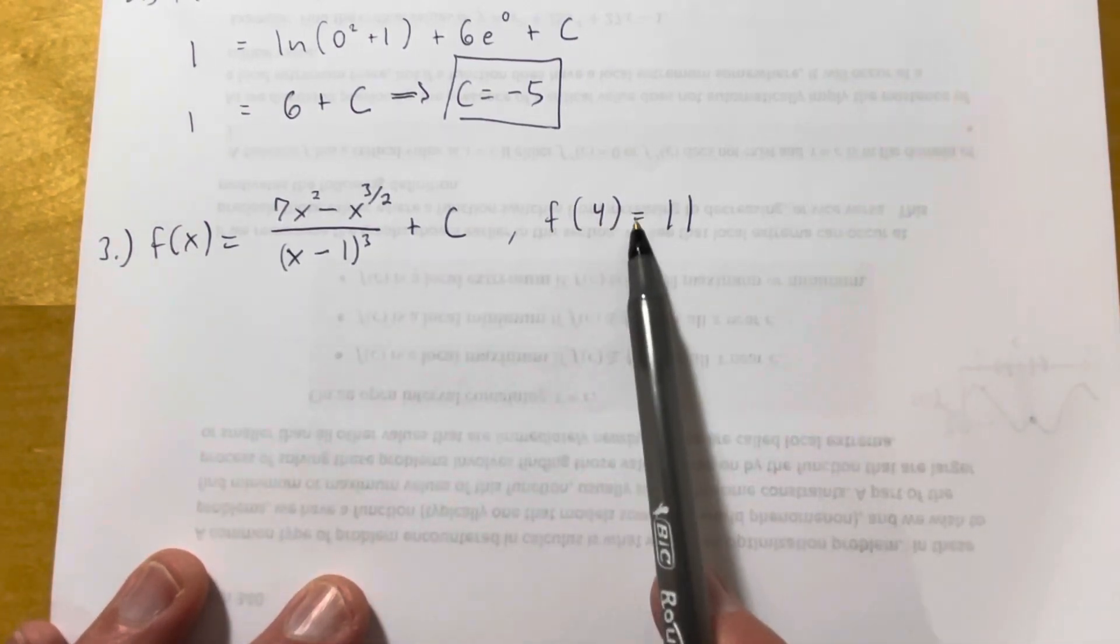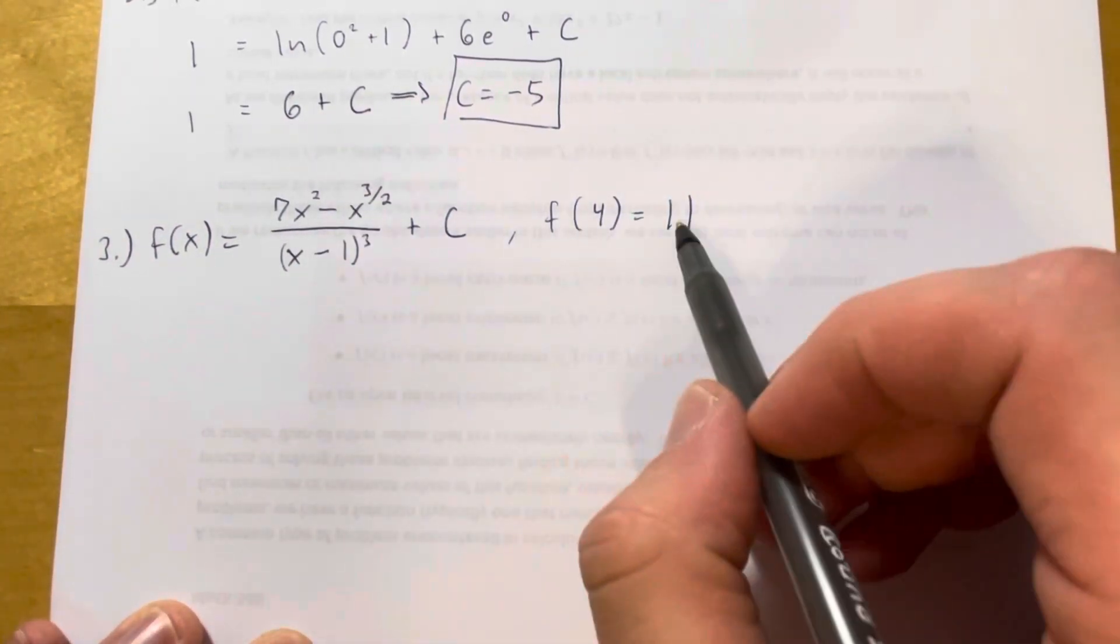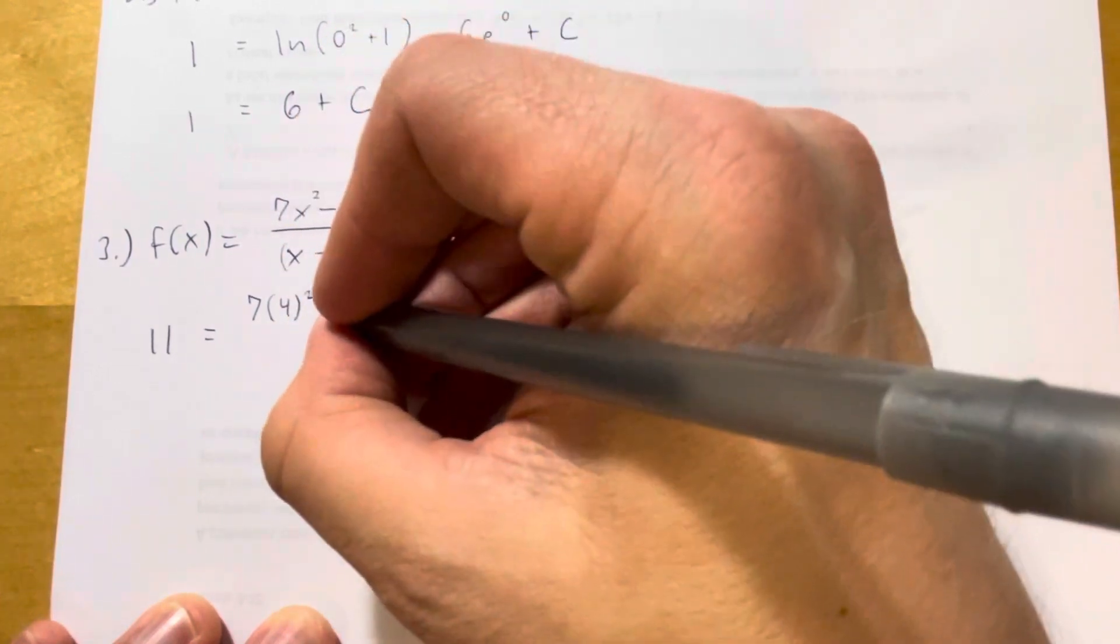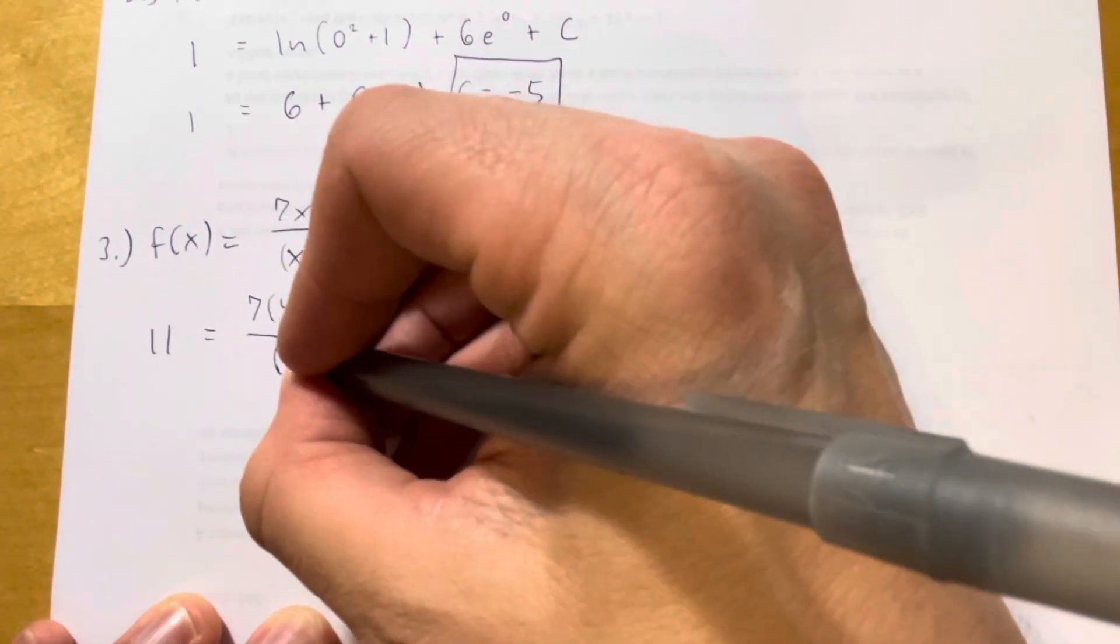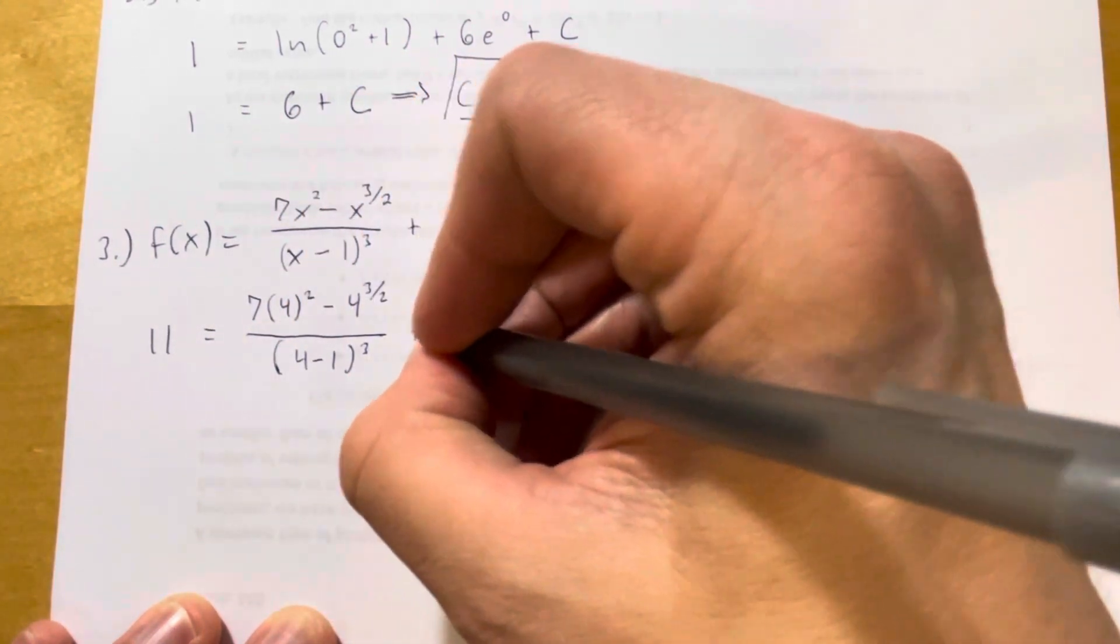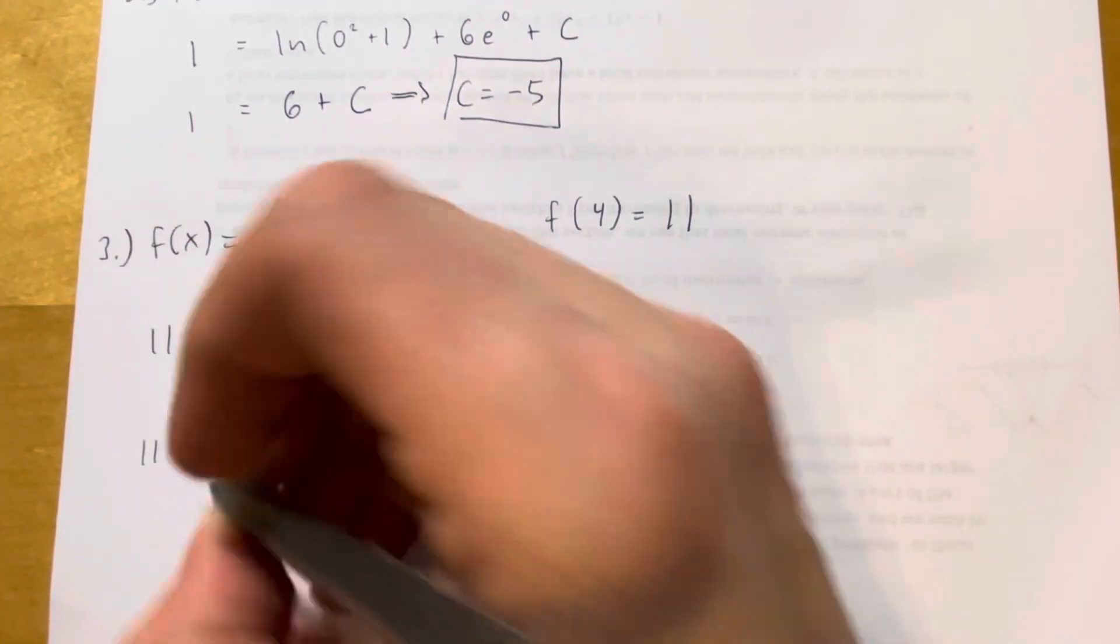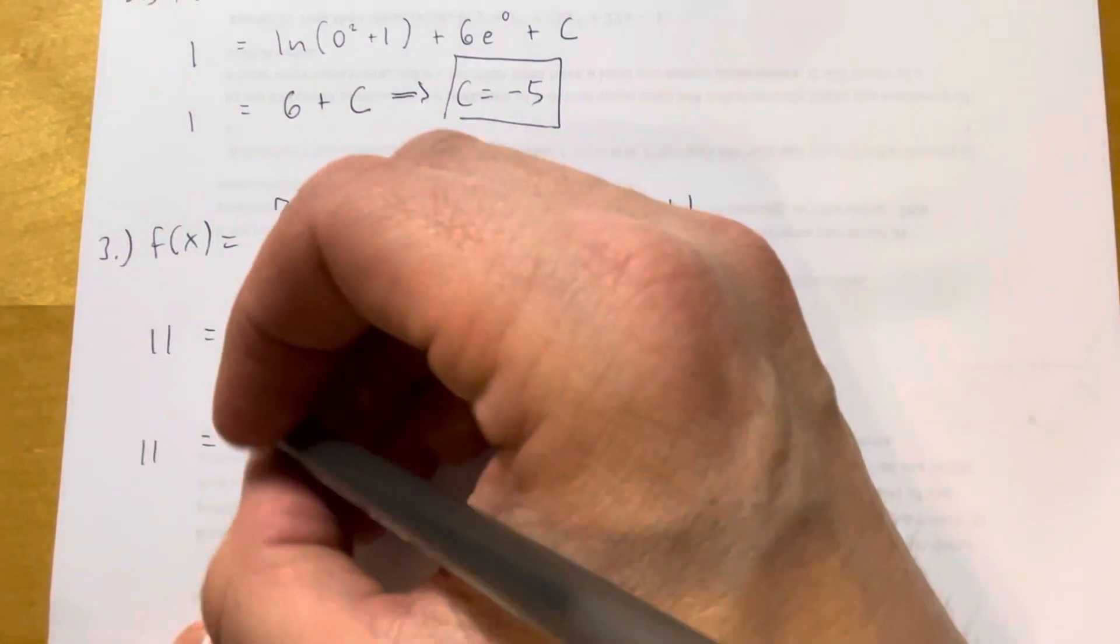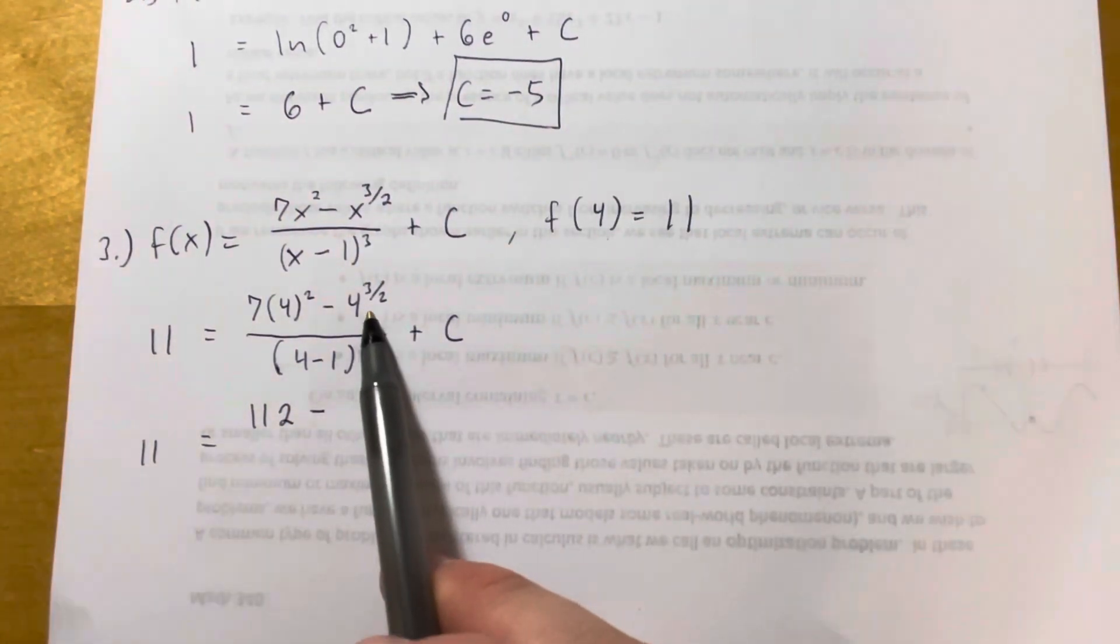And then I also know that f of 4 is equal to 11. So I'm going to plug a 4 into all of the x's, and then set that equal to an 11 on this side. So 11 equals 7 times 4 squared minus 4 to the 3 halves power over 4 minus 1 cubed plus C. Next step. 4 squared is 16, and 16 times 7 is 112 minus.